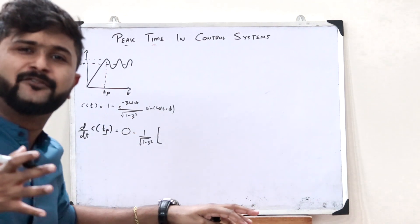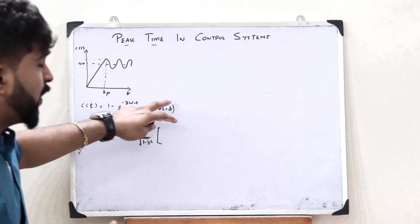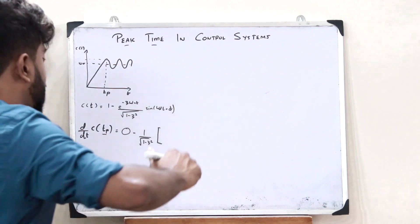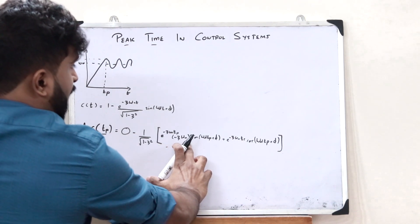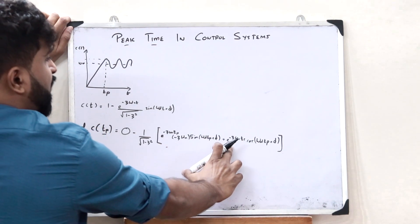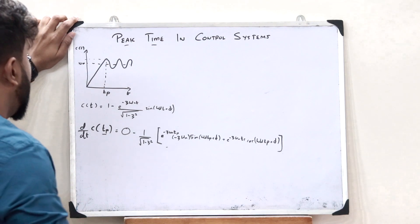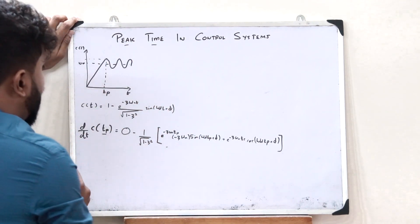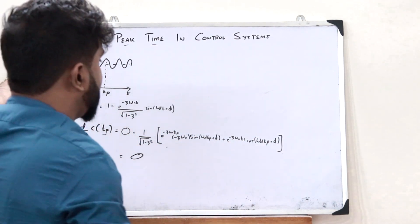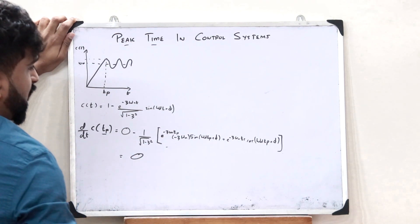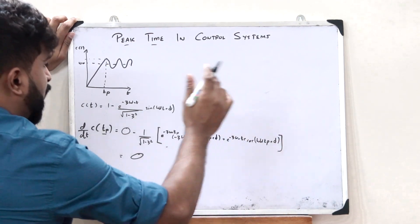This is the multiplication rule of differentiation — first term into the differential of the second term, plus second term into the differential of the first term. Writing it out, we get e raised to minus zeta omega_n t_p into minus zeta omega_n into sine of omega_d t_p plus phi, plus e raised to minus zeta omega_n t_p into omega_d cos of omega_d t_p plus phi. For the maximum value at the peak, this is equal to 0, and e raised to minus zeta omega_n t_p cancels from both terms.